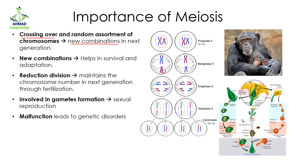The chromosomes are randomly assorted into the next cells, and because of this, new combinations are produced. If there is no crossing over, then the next generation will have the same properties as the parent cells. We can see that the parents and the next generation are different.